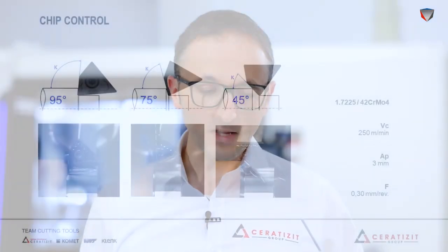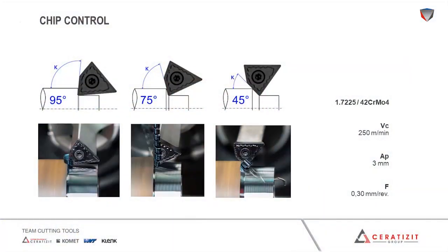Another benefit is chip control. The ability to adjust the approach angle during the cut gives you the possibility to ensure really optimal chips during your cutting process. The pictures are taken on the same bar with the same feed rate and the same cutting speed. Just by changing the approach angle, we receive three totally different chip shapes. Enough theory for the moment — let's take a look into the machine and make some chips with free turn.